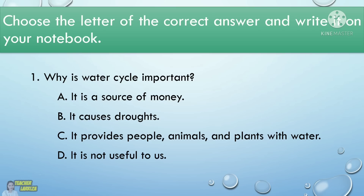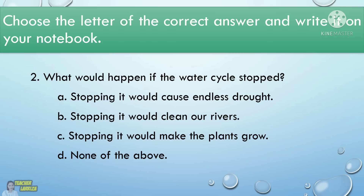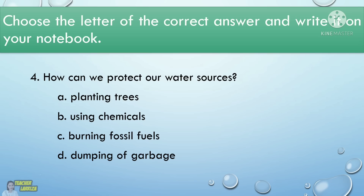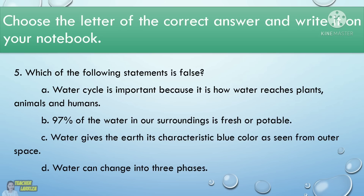Now let's mark your answers for this activity. For number 1, the correct answer is C — it provides people, animals, and plants with water. For number 2, the correct answer is A — if the water cycle stopped, it would cause endless drought. 3. The correct answer is C — damming rivers for hydroelectricity. 4. The correct answer is A — planting trees. And for the last number, the correct answer is B. Did you get all the correct answers? You're doing a great job! Excellent!